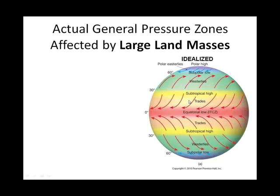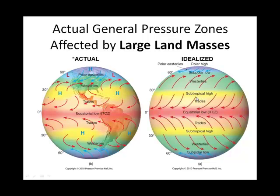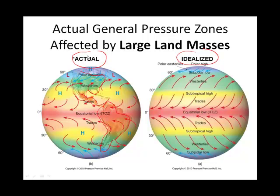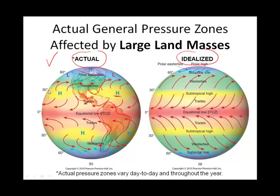So we do kind of see those pressure belts. This is ideally what those pressure belts would look like. Now I'm going to show you the influence of land, where land heats and cools differently than large bodies of water. Can you see where there is a scramble between the idealized surface pressure zones and what it actually is? You do see these very important subtropical highs in either hemisphere — they don't go across the land necessarily — but you also see the intertropical convergence zone where the trade winds converge, and a high pressure at the poles: the polar high.